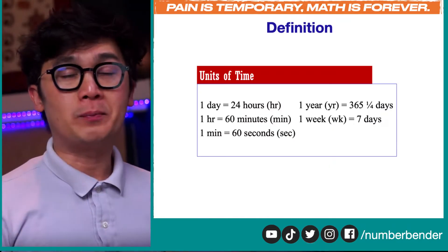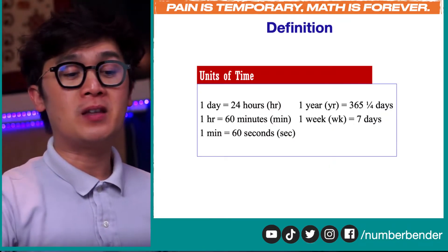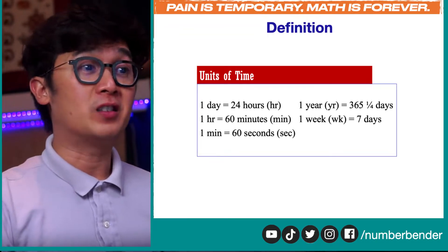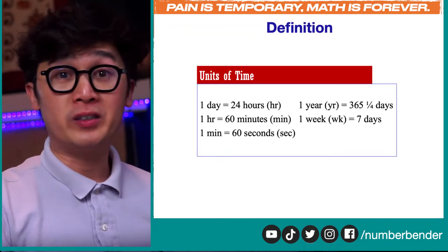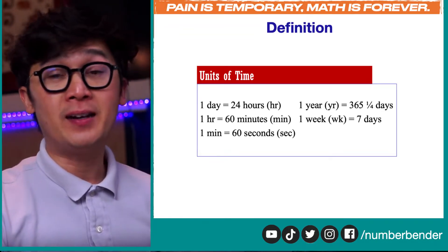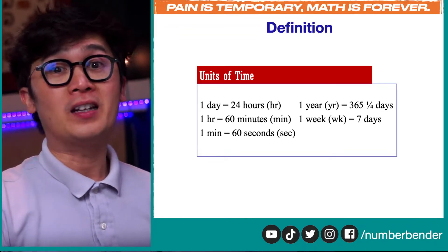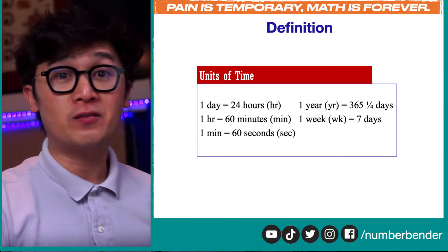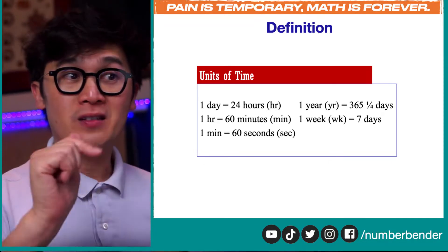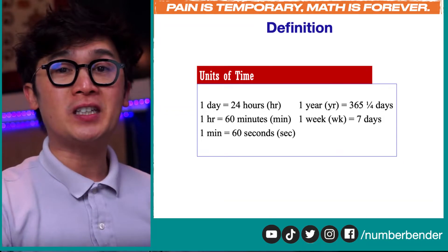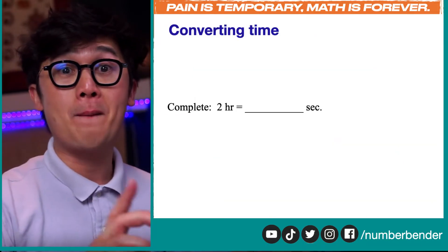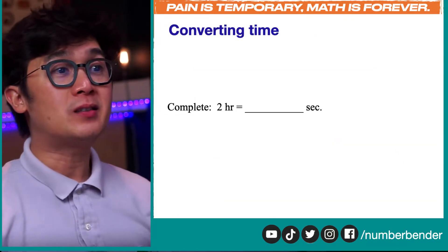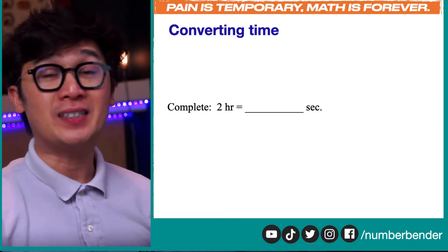So for time, this will be the unit of measurement that we're going to be using. We know that there are 24 hours in a day and 60 minutes in an hour and so on. We'll use this cheat sheet so that we'll be able to convert problems like: two hours into how many seconds.